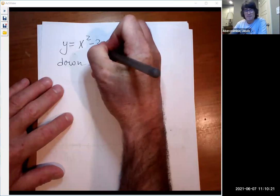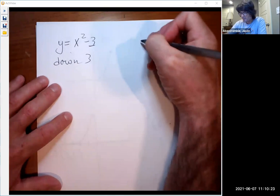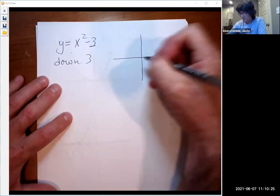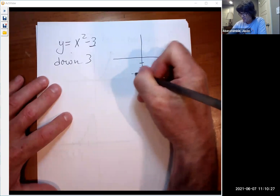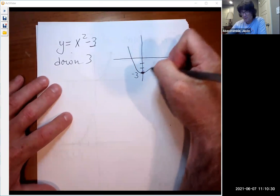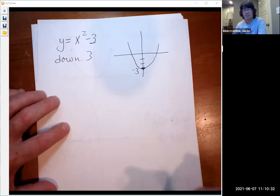This is down 3. And also keep in mind, minus means down, plus means up, as you would expect. So now we're going to take this and move it down 3. And there we go. That's a translation down 3.